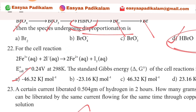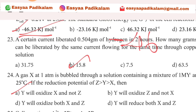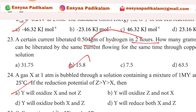50 rupees. 46. Cost minus 46. Option answer: minus 46.32. Twenty-third question: a certain current liberated 0.50g. 2,000. 4. 8. 15.8.